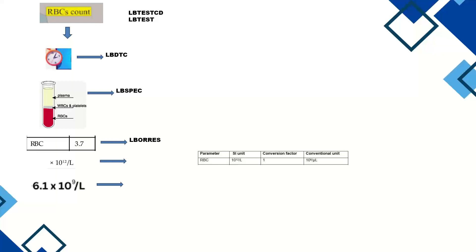The original result value obtained from analysis — for example, 3.7 — is mapped to LBORRES (original result). The units associated with that original value are mapped to LBORRESU (original result units). So one subject may have units of 10^12 and another subject may have units of 10^9/L as the original collected units.